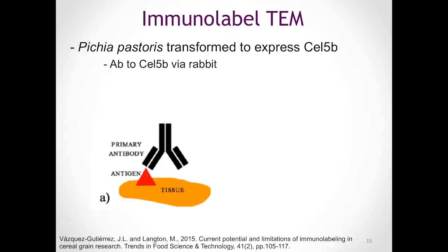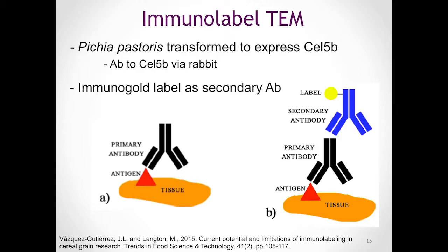In transmission electron microscopy, you won't be able to see movement of the enzyme by itself. However, if you label it with a metallic component, you can then actually see it show up on the transmission electron micrograph. For this reason, we created a secondary antibody that would recognize the primary antibody, which would then follow our enzyme of interest. This is the immunolabel, also called the immunogold label, as we're using a small 6 to 8 nanometer gold particle attached to the secondary antibody.